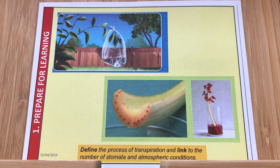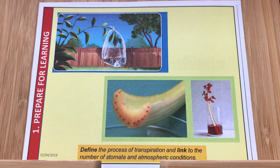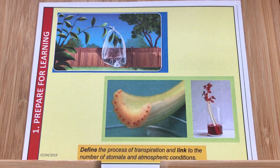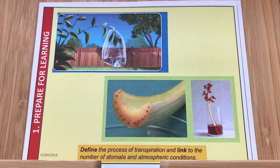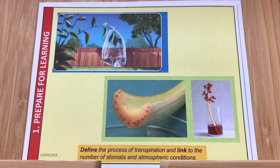Transpiration is the movement of water from the roots through the xylem to the leaves — so through the stem and then to the leaves — and that water is lost as evaporation, or transpiration, or evapotranspiration, through the stomata between the guard cells.